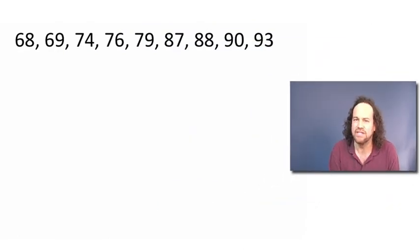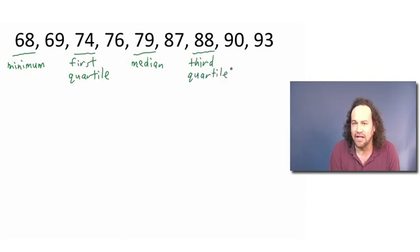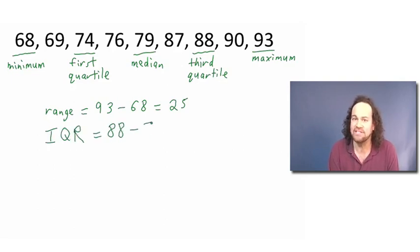Let's go back to those 9 student grades that we saw earlier. We already know in this case how to identify the minimum and the first quartile and the median and the third quartile and the maximum grade. This means right away we can compute the range by taking the maximum value minus the minimum value. We can also compute the interquartile range by taking the third quartile minus the first quartile.